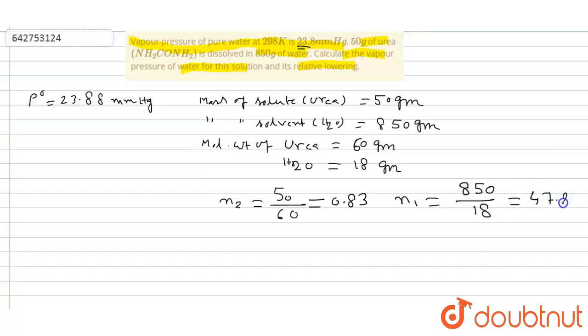47.22. Now in the question ask that relative lowering of vapor pressure, that is P⁰ minus P by P⁰ equal to x₂, where P is the vapor pressure